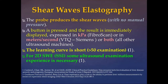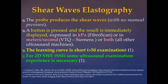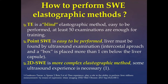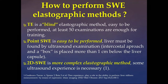Shear wave elastography is very simple. The probe produces shear waves — we don't need to apply any pressure. Usually we find the liver, put a box, push a button, and have the results very quickly, expressed in kilopascal or meters per second, or both on most machines. The learning curve is very short — usually 50 examinations is enough to gain some experience, though for 2D SWE some additional ultrasound experience is necessary.